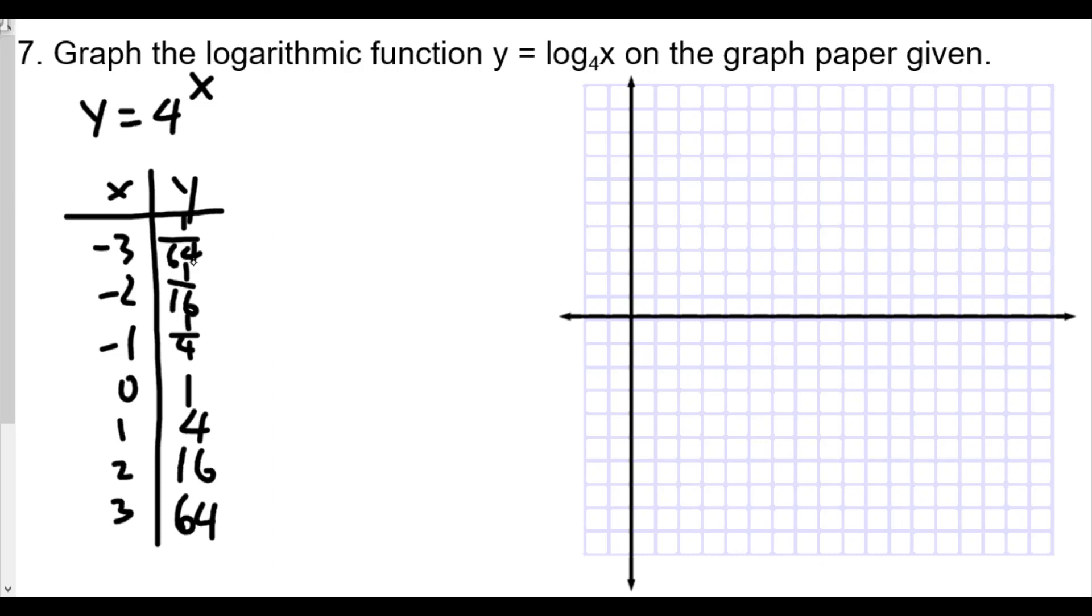You might be saying why are you finding this first? It doesn't make any sense. Well, because if we want to find the coordinates for y equals log base 4 of x, what we're going to do is we're going to just switch the x and y values. So whatever the y values were for y equals 4 of the x become the x values. So 1 over 64, 1 over 16, 1 over 4, 1, 4, 16, and 64.